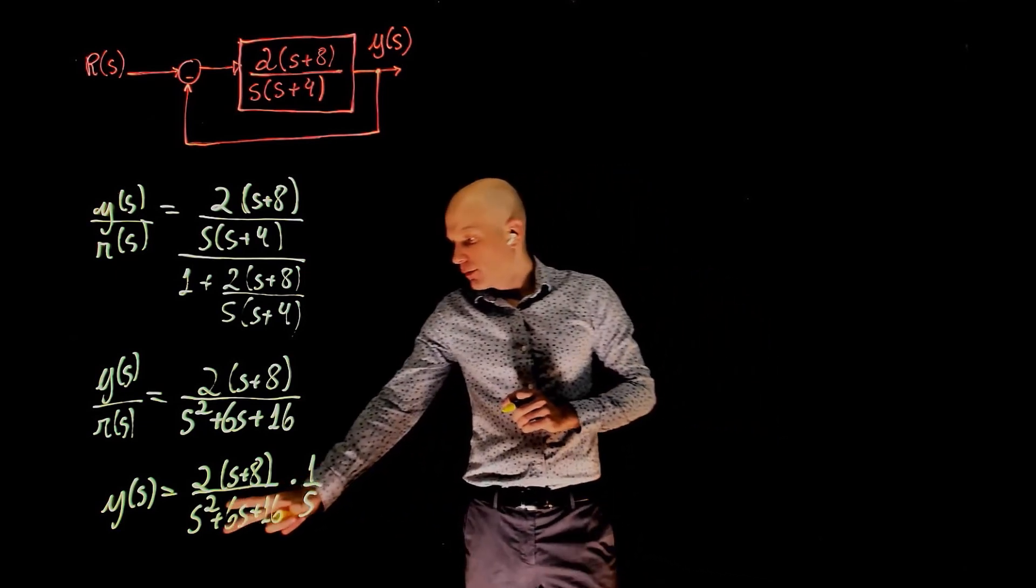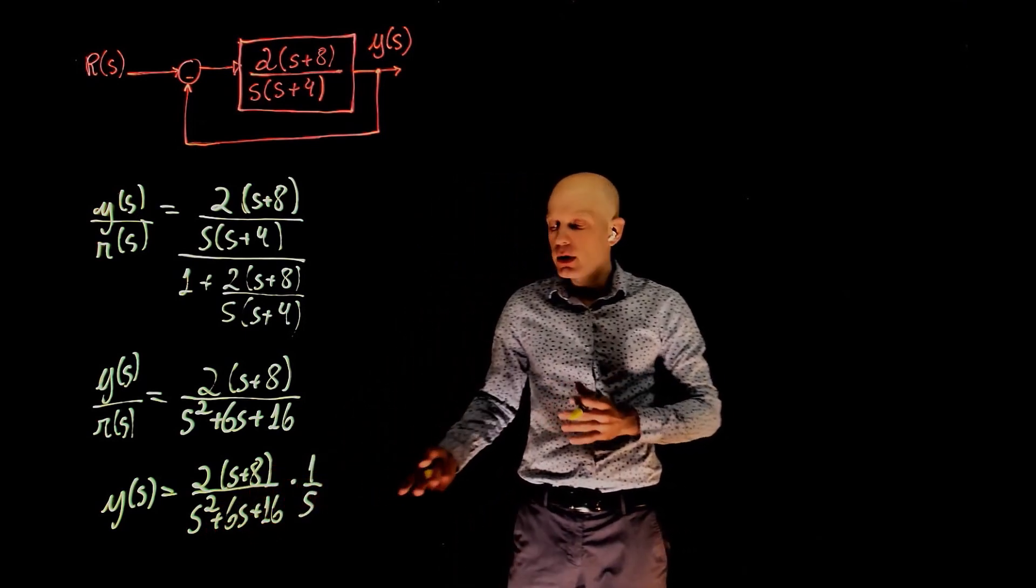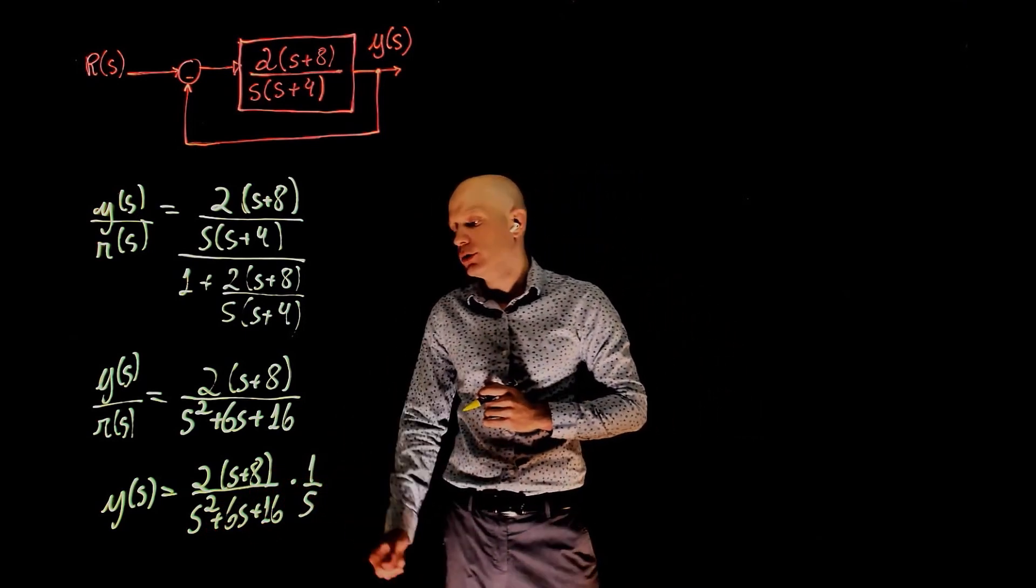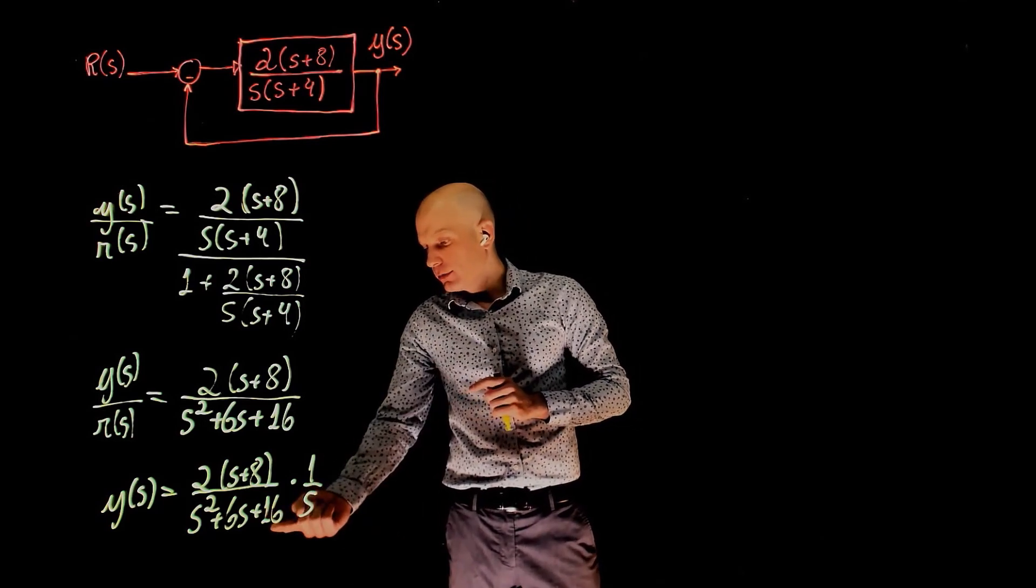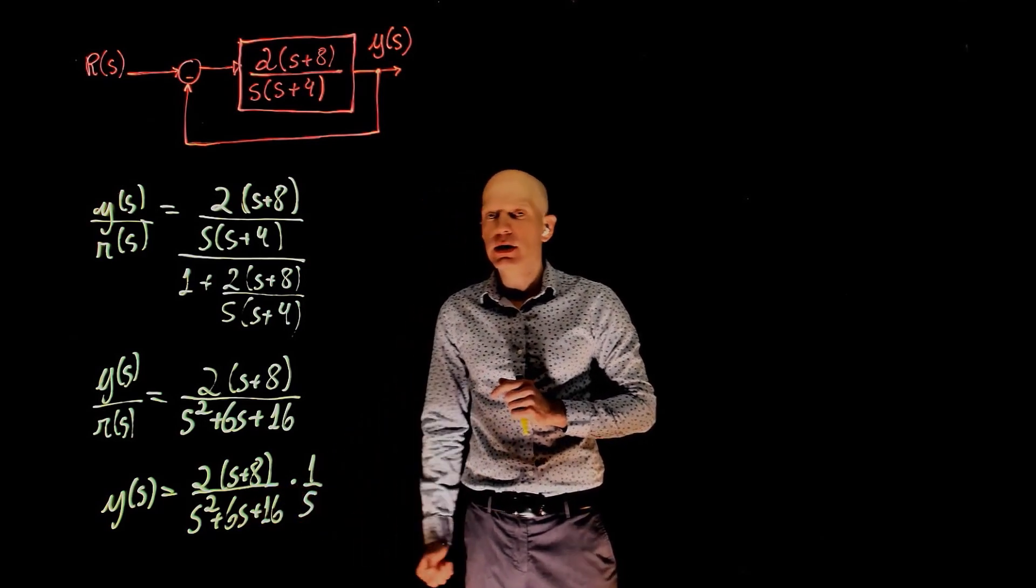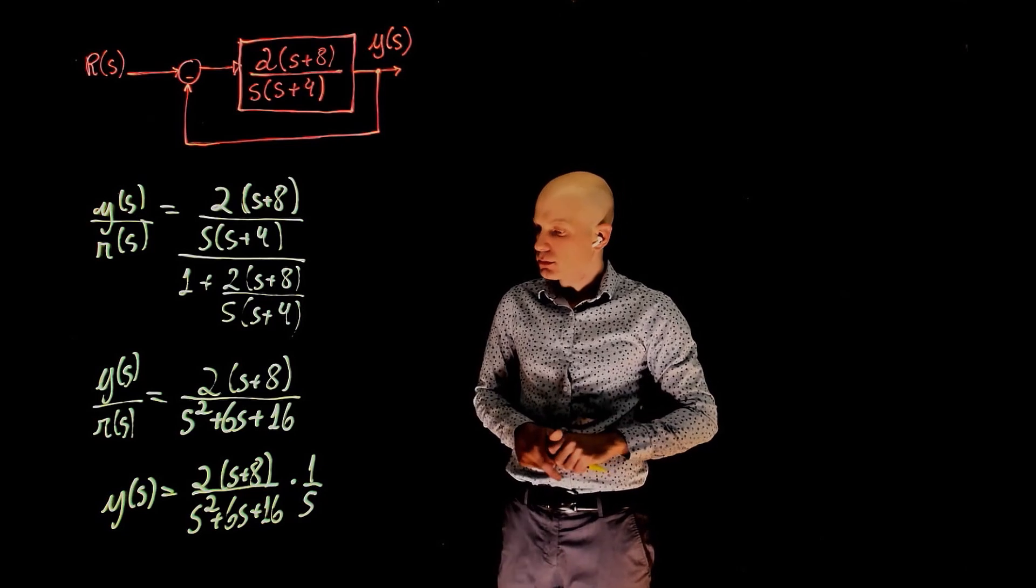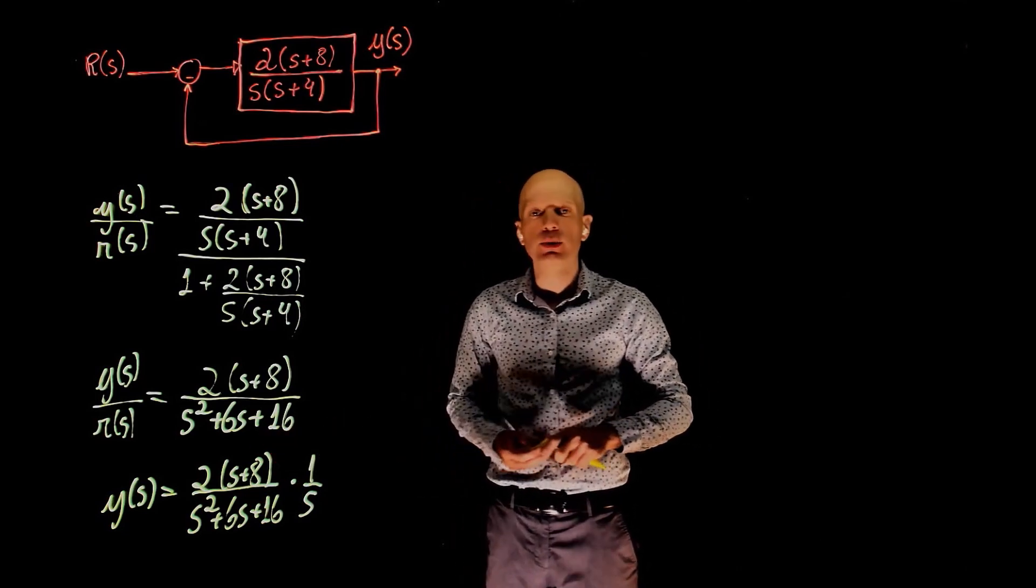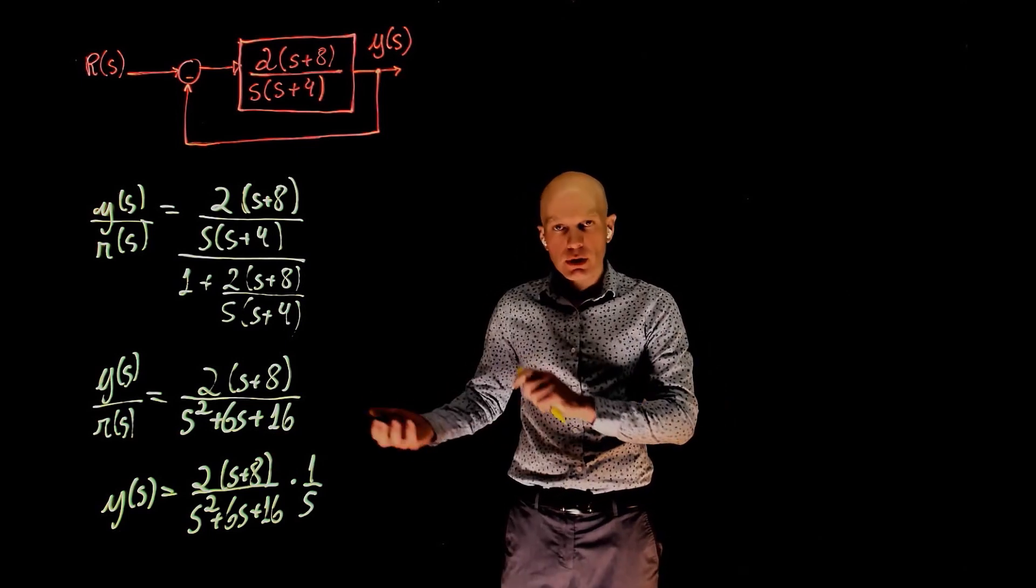We know that this now falls into a standard form. We could very well simply use the equations that we developed before to find the percent overshoot. We can identify omega n, we can identify zeta, and then using the equations we find the percent overshoot. But let's do this again, let's do this in the hard way, just to see how those equations were derived.